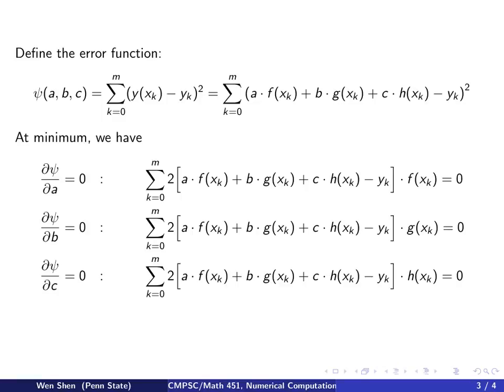So we know at the minimum, the partial derivative with respect to a, b, and c shall all be 0, and that will allow us to write three equations.